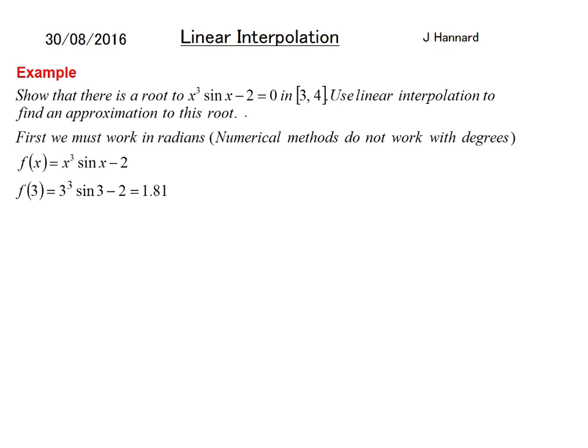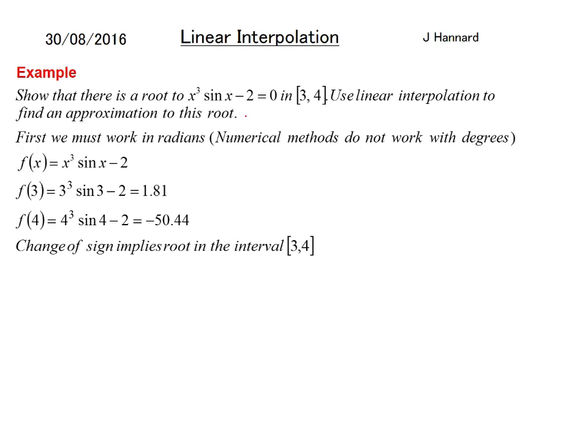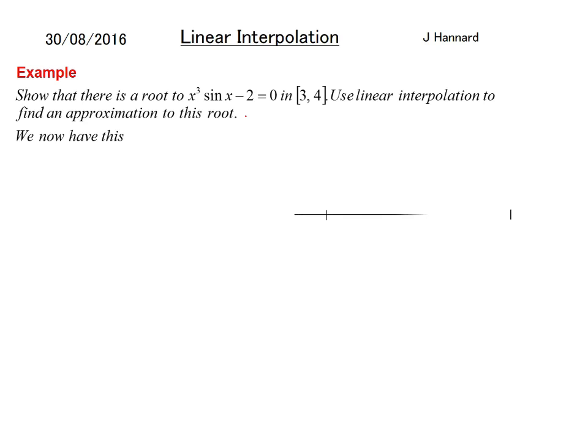Putting 3 in, you get 3³ × sin(3) - 2, which is approximately 1.81. When you put 4 in, you get 4³ × sin(4) - 2, which equals approximately -50.44. Quite a difference there, but we're looking for a change of sign and we've got that, which implies there's a root in the interval [3, 4]. Now we use 1.81 and -50.44 as our triangle dimensions. Draw the number line with 3 and 4.